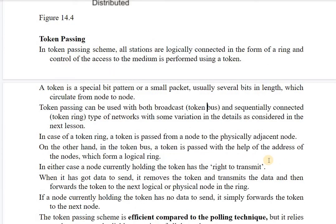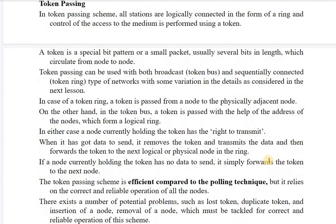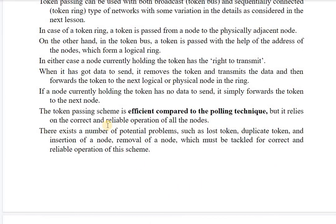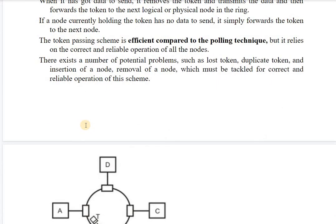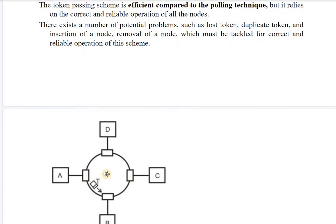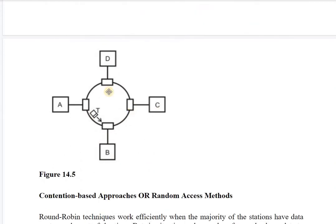Token passing and polling are the two approaches for the round robin manner. Token passing is more efficient than polling, but it relies on correct and reliable operation of all nodes and has problems such as lost tokens, duplicate tokens, insertion of a node, and removal of a node.